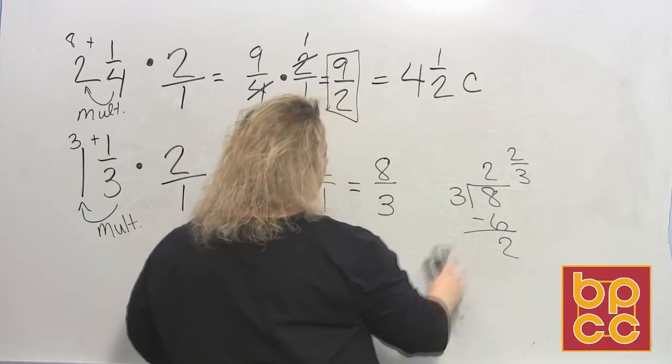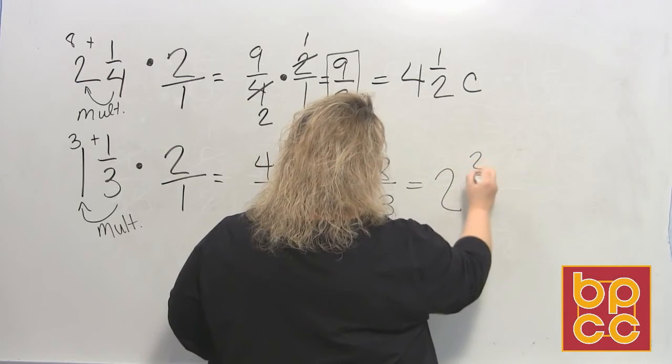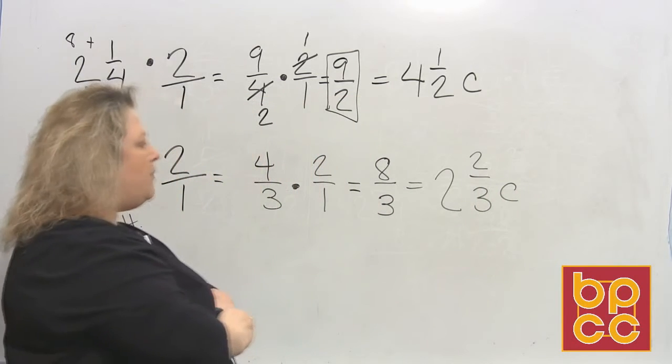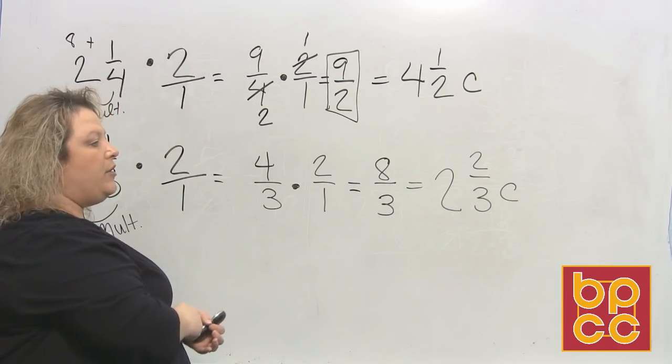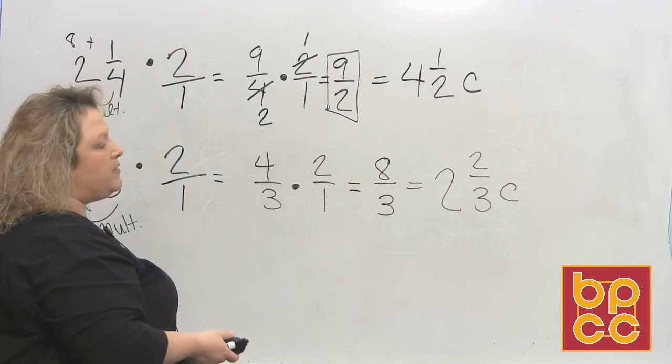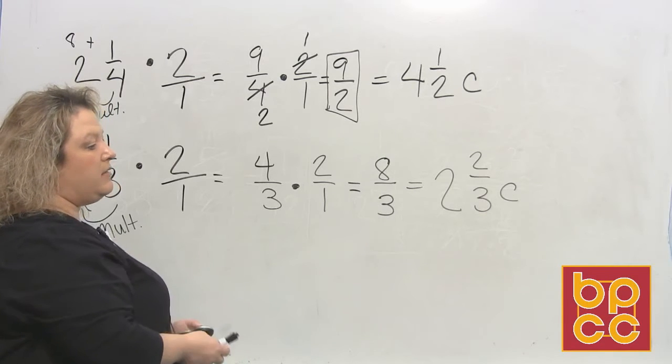So let me write that bigger so you can see that. 2 and 2/3 cups of peanut butter. So anytime you're going to double the recipe or you're adding inches together or anything like that, when it's a measurement, you always want to make sure that you know how to change it to a mixed number so that it makes sense.